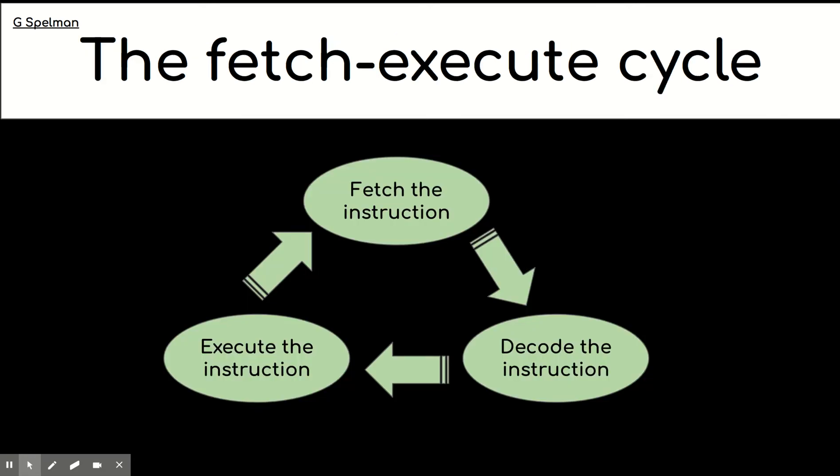Here's a diagram of the fetch, decode, execute cycle. So an instruction is fetched from memory. The CPU then decodes that instruction so it works out what do I need to do here and it carries out the instruction. This process is repeated over and over.